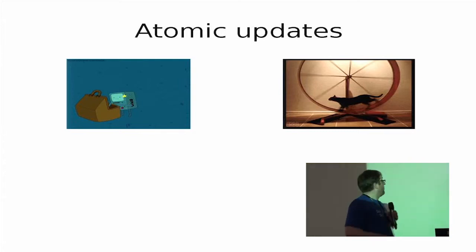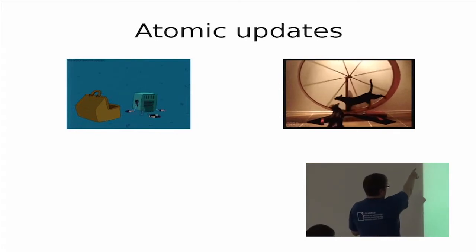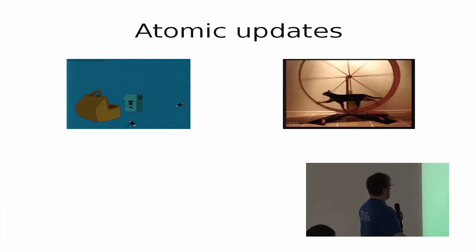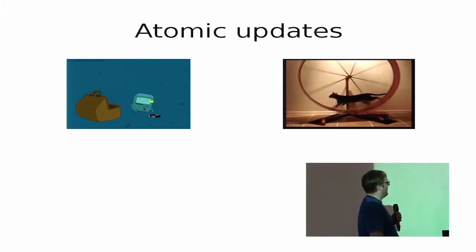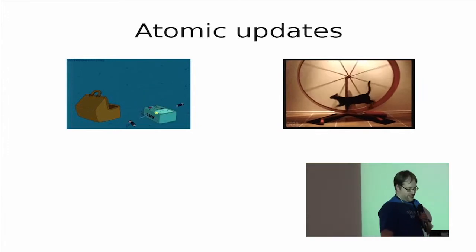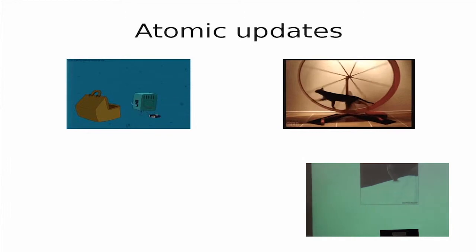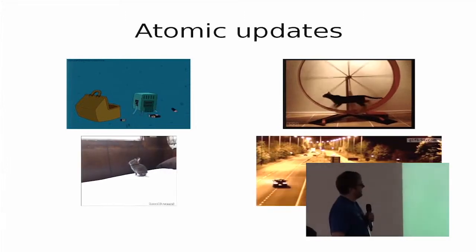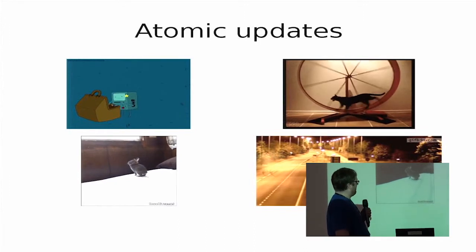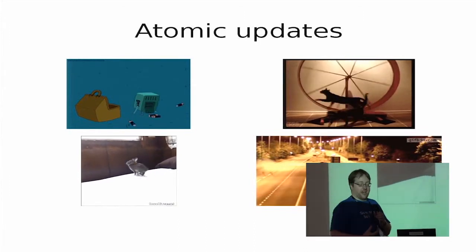One reason for that is with Git you have atomic updates. Because right now packaging looks like this: you put the batteries out and you fall onto the new package and you really hope that everything goes fine — this is how you hope it works. But sometimes stuff like that happens, and then you really want to have the ability to go back atomically to everything like you had it before.